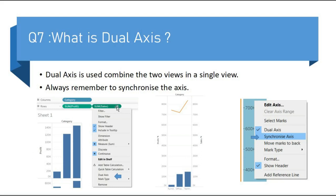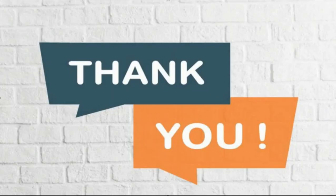To use the dual axis, right click on the sales and choose dual axis. And don't forget to synchronize the axis, otherwise you will not get the accurate data. To synchronize the axis, right click on the axis and choose synchronize axis.